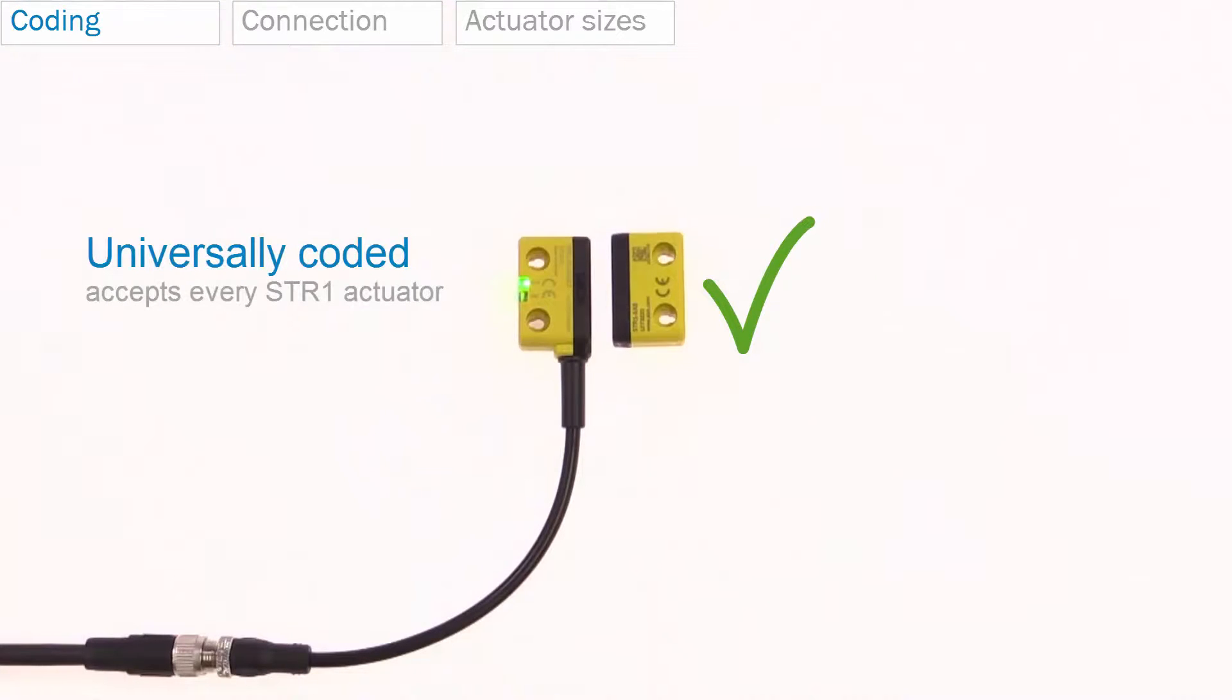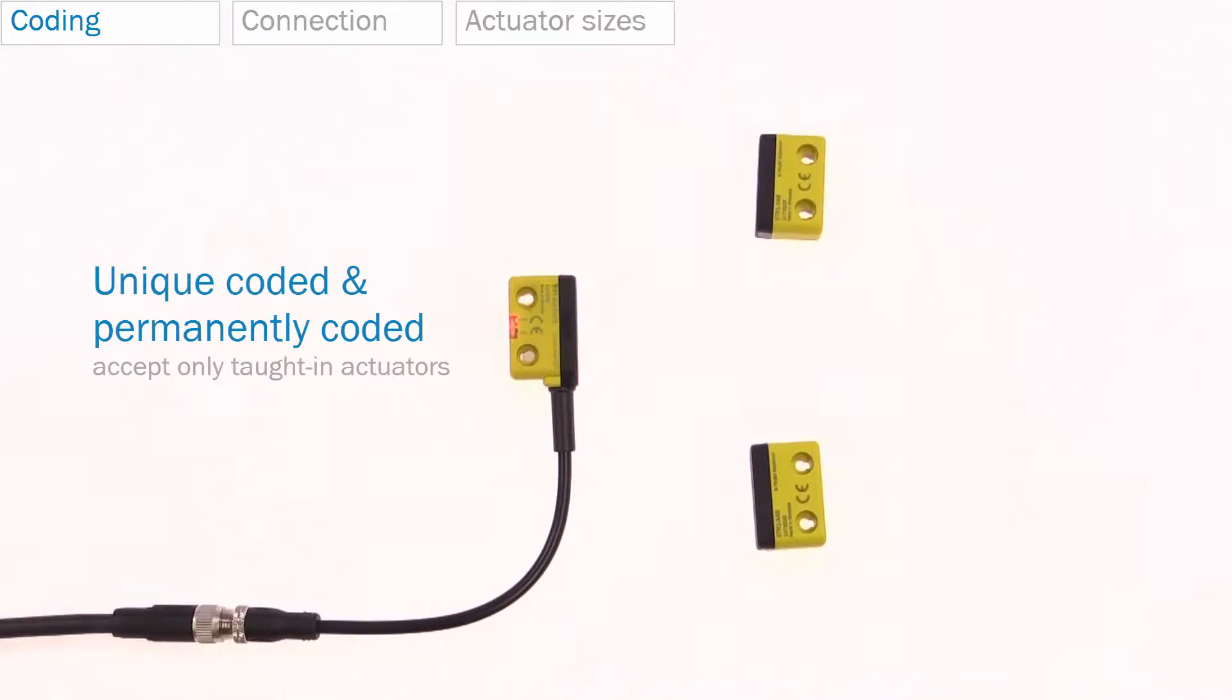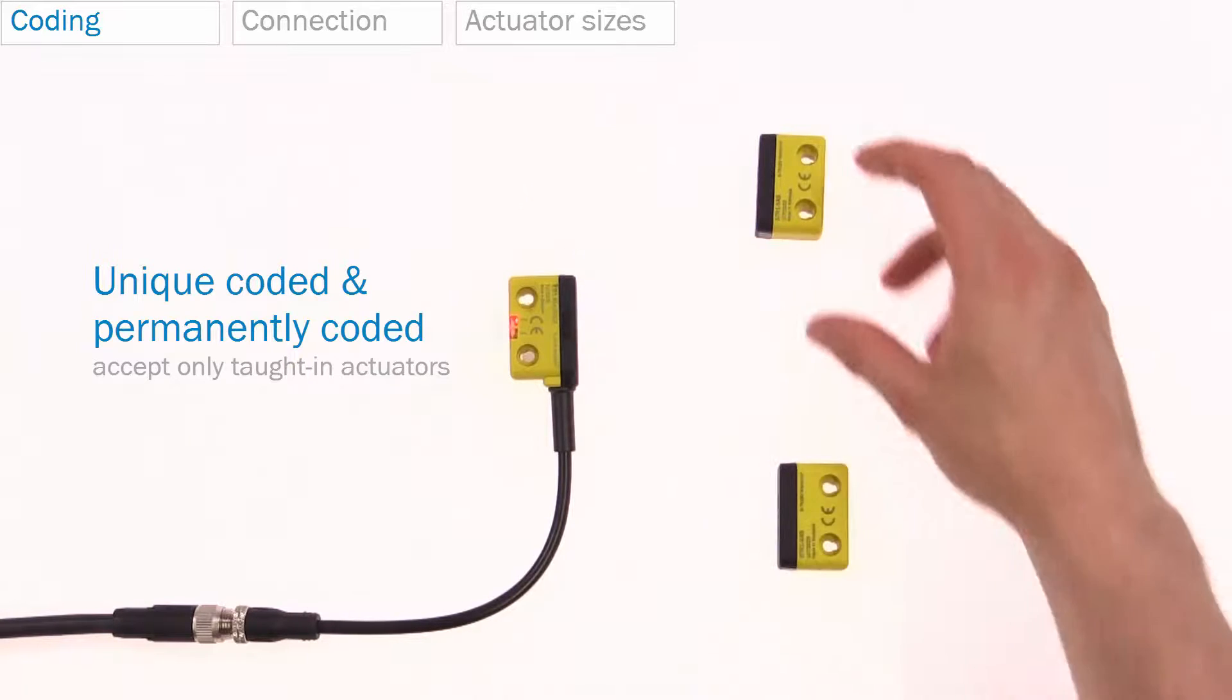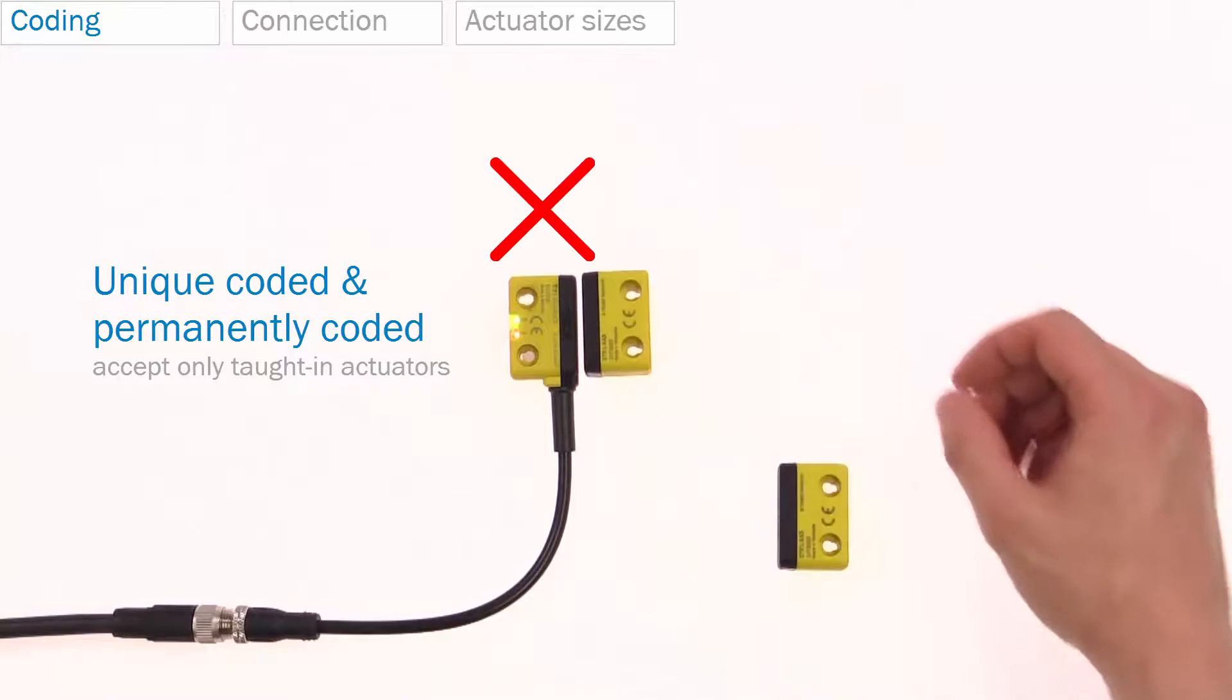Universally coded sensors accept every STR1 actuator. For applications that require a high level of protection against tampering, SICK offers two high coded versions: unique coded and permanently coded sensors. These accept only the taught-in actuator.